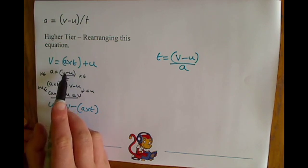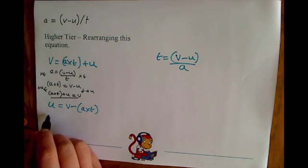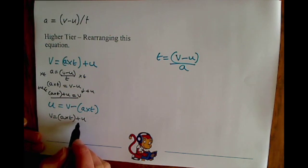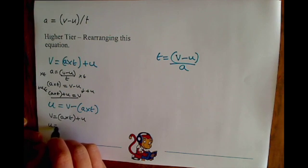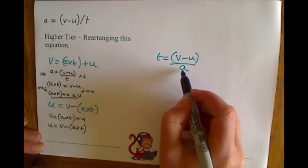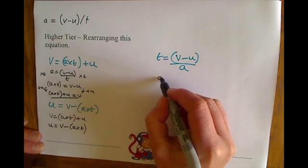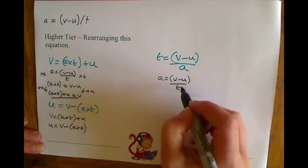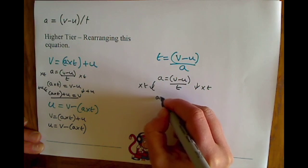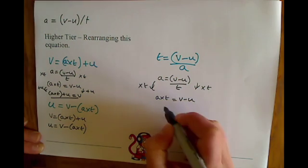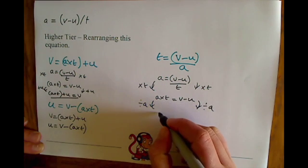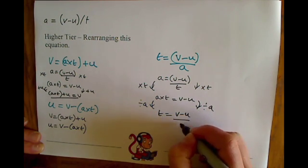From v equals a times t plus u, if you want u equals, just take away a times t from both sides, giving u equals v minus a times t. And for t equals: starting from a equals v minus u divided by t, multiply both sides by t to get a times t equals v minus u, then divide both sides by a to get t equals v minus u divided by a.